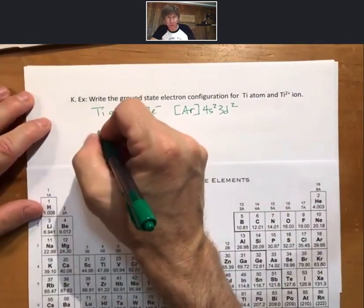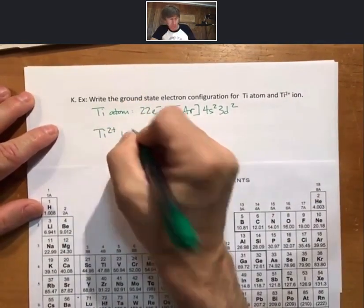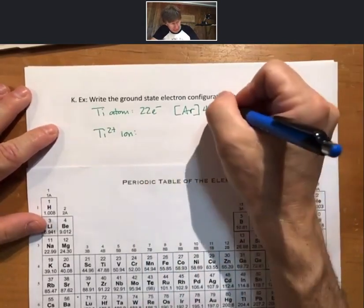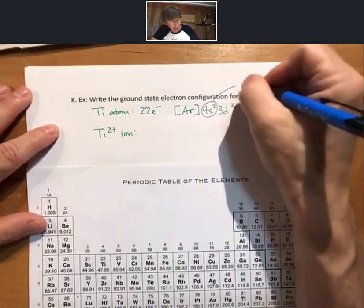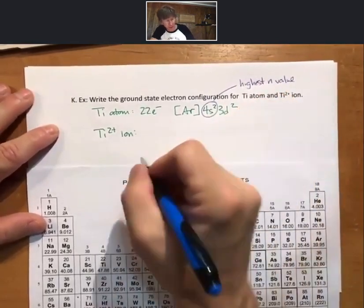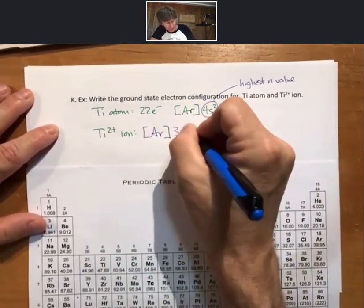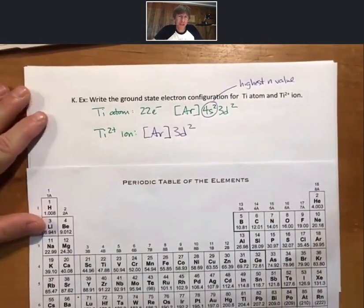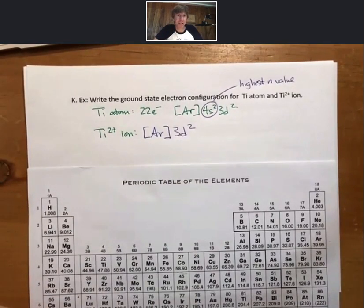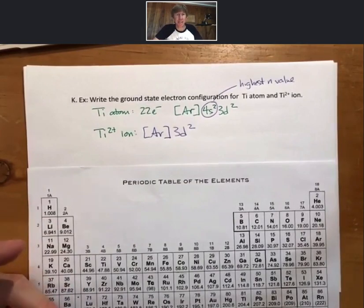For the titanium 2+ ion, we are going to remove two electrons — those are going to be the highest energy electrons. The highest energy electrons always have the highest value of n. So we remove the two 4s electrons and are left with [Ar] 3d2. Experimentally, it has been determined that the two highest energy electrons are the 4s electrons.